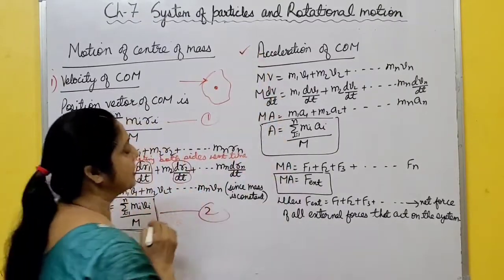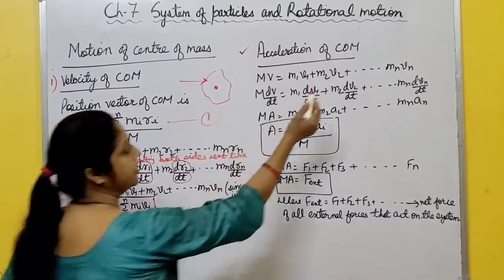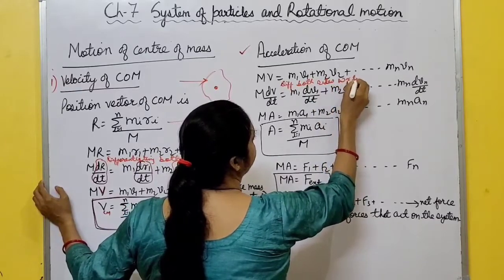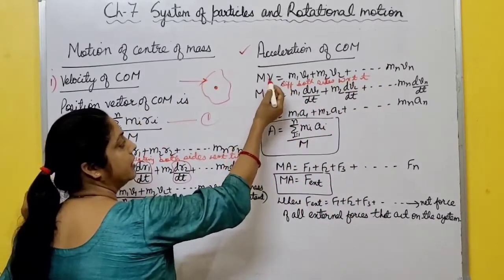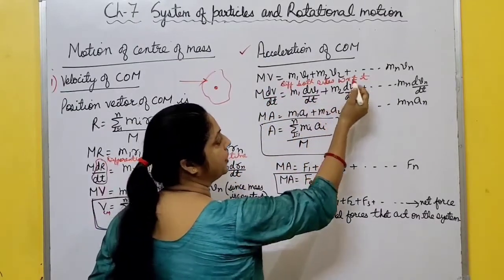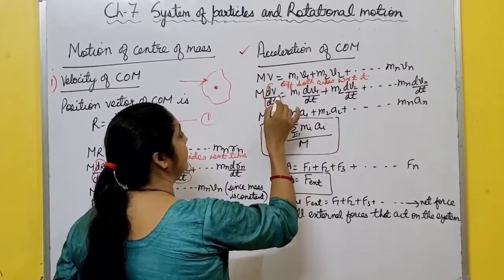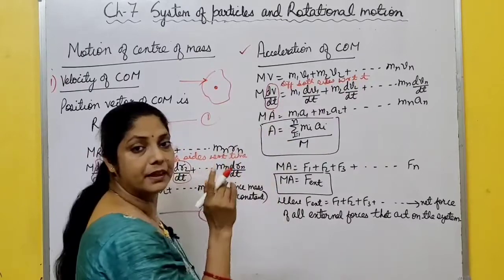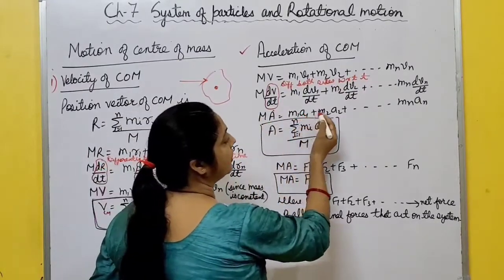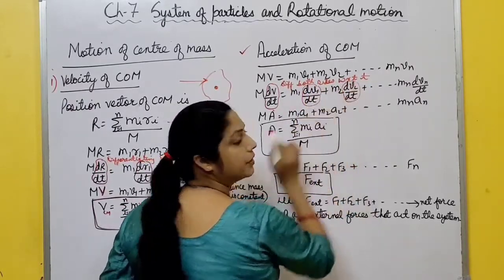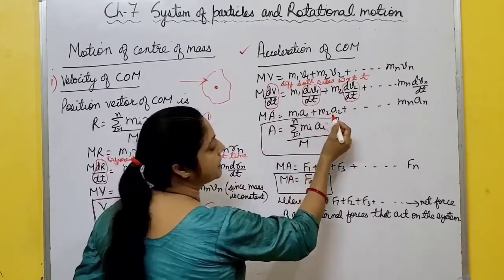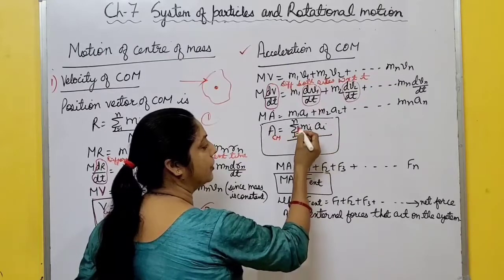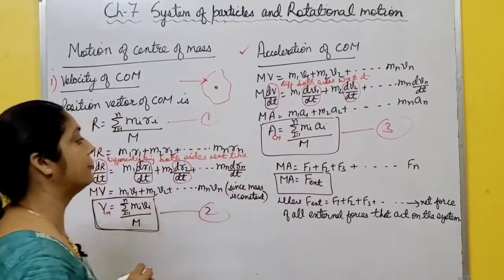For acceleration of center of mass: MV = m₁v₁ + m₂v₂ + ... Differentiating again with respect to time: M(dV/dt) = m₁(dv₁/dt) + m₂(dv₂/dt) + ... Since dV/dt is acceleration of center of mass A, we get MA = m₁a₁ + m₂a₂ + ... So acceleration of center of mass Acm = Σmᵢaᵢ / M.